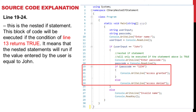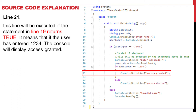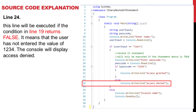Lines 19 to 24 contain the nested if statement. This block of code will be executed if the condition of line 13 returns true — meaning the value entered by the user is equal to "john." Line 19: The nested if statement is also a conditional statement to be tested. Line 21: This line executes if the statement in line 19 returns true, meaning the user entered "1234" — the console will display "Access Granted." Line 24: This line executes if the condition in line 19 returns false, meaning the user did not enter "1234" — the console will display "Access Denied."